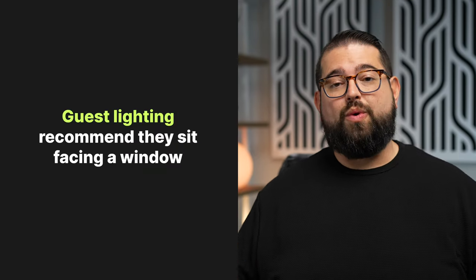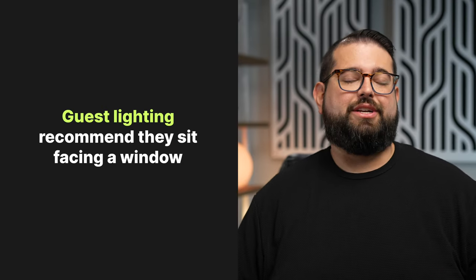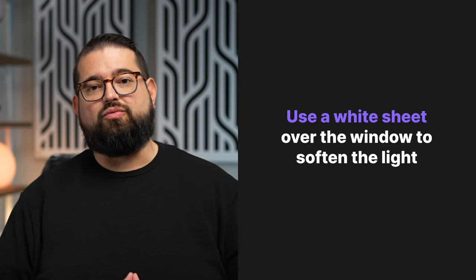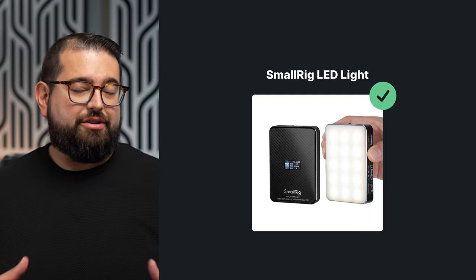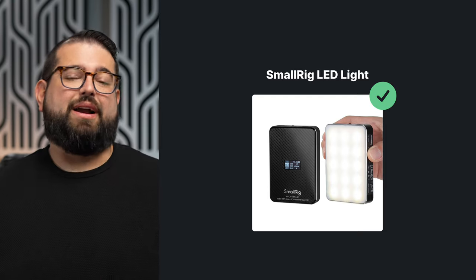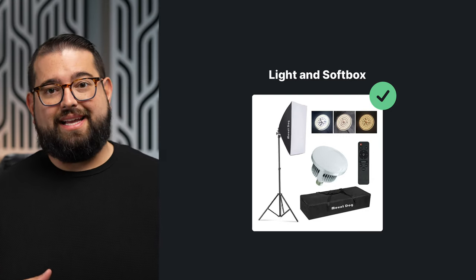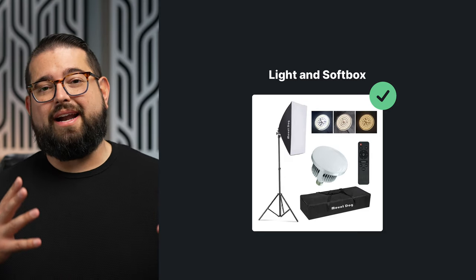The last piece of the guest setup is lighting. They probably don't have dedicated lights, so recommend they find a room with a window and sit in front of it — not with the window behind them, which creates a silhouette effect. If the light from the window is too harsh, they can throw a sheet over it or close a curtain. If you have the option to send them a light, there are small LED panels under $100, battery powered, that you can send with a small tripod. For a big interview, you could send them a lighting kit with a softbox on a stand for soft, even light that eliminates harsh shadows.